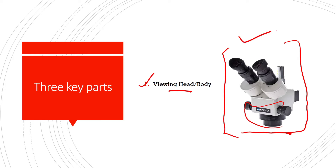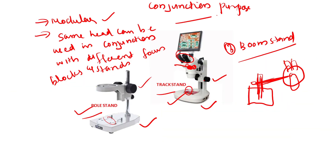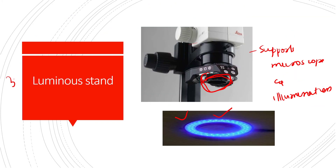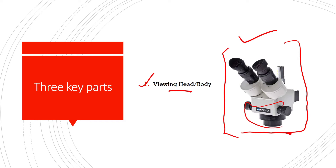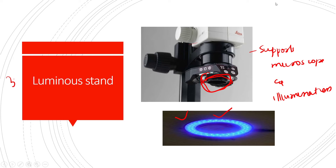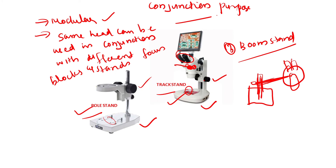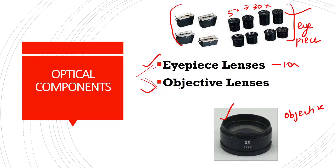The first component is the viewing head or body, which consists of the optical components — the eyepiece lenses and objective lenses. The second is the focus block. The third is the luminous stand, which supports the microscope and provides illumination. The stereoscopic microscope also has a modular design so the same head can be used with different focus blocks and stands — pole stand, track stand, and boom stand.